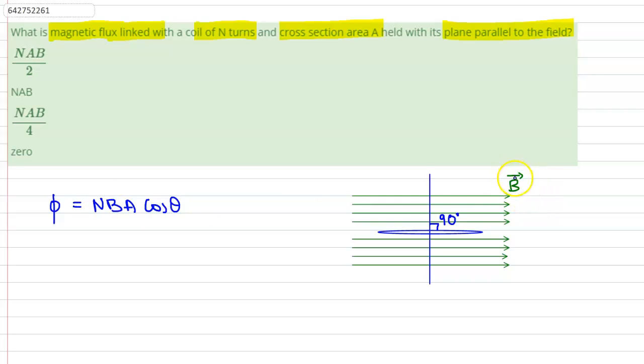B is the magnitude of the magnetic field, A is the cross-section area of the coil, and θ (theta) is the angle that the normal to the coil's plane makes with the direction of the magnetic field. As we can see from the diagram, θ is equal to 90 degrees.